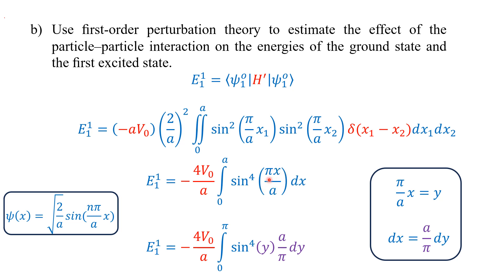We substitute y = πx/A, so dx = (A/π)dy. The limits change: when x = 0, y = 0; when x = A, y = π. This gives E₁¹ = −(4V₀/A) · (A/π) · ∫₀^π sin⁴(y) dy. The factor A/A cancels, leaving E₁¹ = −(4V₀/π) · ∫₀^π sin⁴(y) dy.